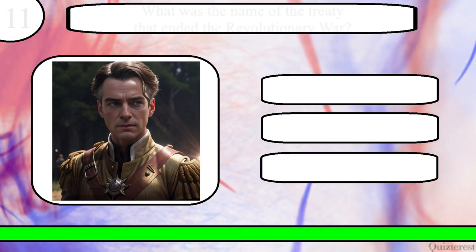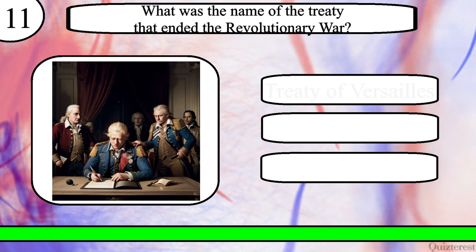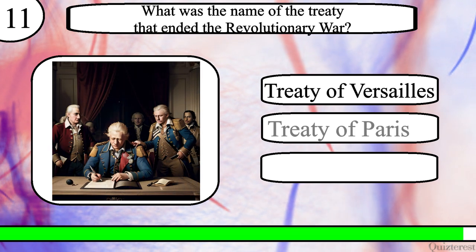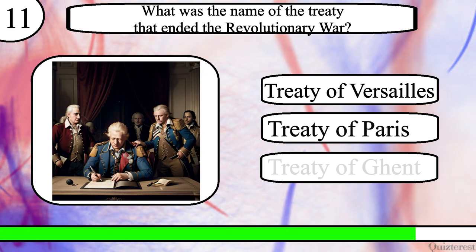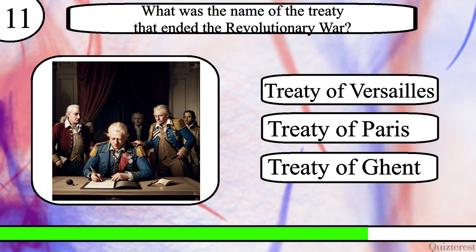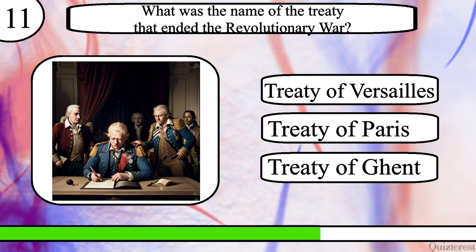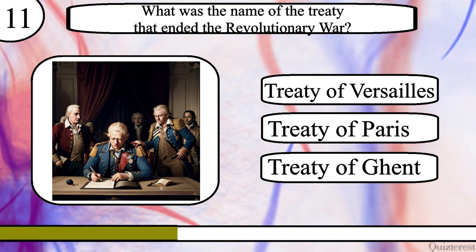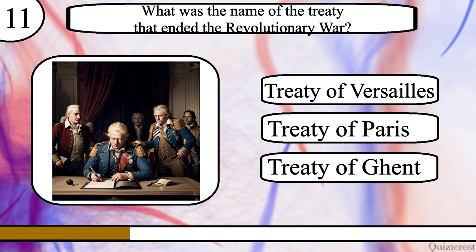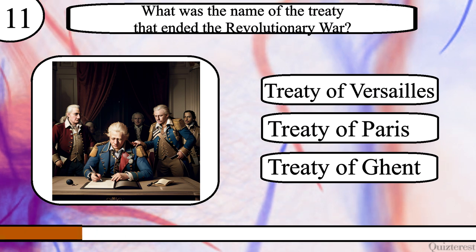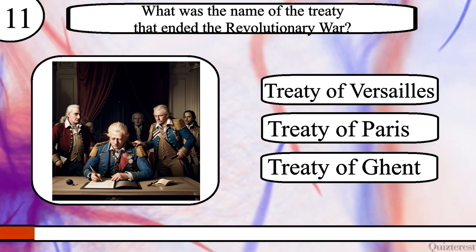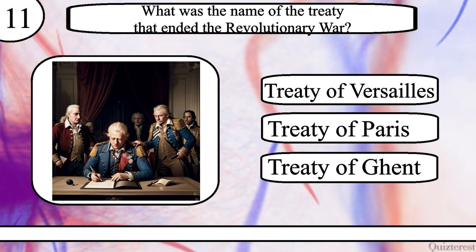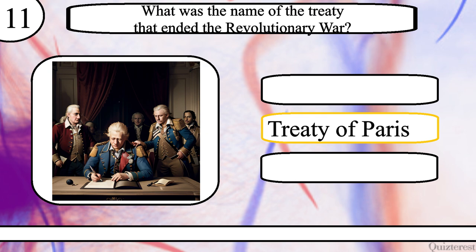Question 11. What was the name of the treaty that ended the Revolutionary War? Treaty of Versailles, Treaty of Paris, or Treaty of Ghent? The correct answer is Treaty of Paris.